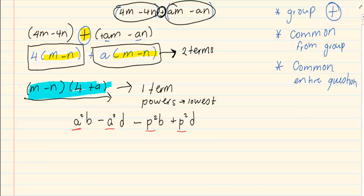Now, when I am grouping, I am going to rewrite it. So I'm going to have a squared b minus a squared d. That's my first group. But look, I'm putting a plus. And then when I'm grouping the second group, this minus is part of the p squared b. So I need to write it in the second bracket minus p squared b plus p squared d.